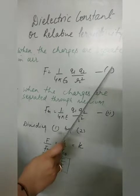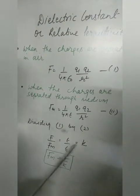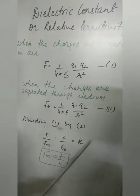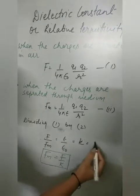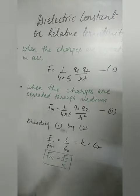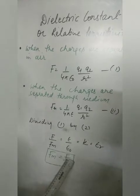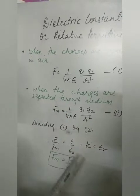Now if I divide equation one by two, we get F divided by Fm equals ε upon ε₀. This ratio of the forces we call the dielectric constant, also written as εr, which is the relative permittivity. One thing worth noting is that when you change the medium, the force which existed in air is considerably reduced. The force will always be reduced when you change the medium.